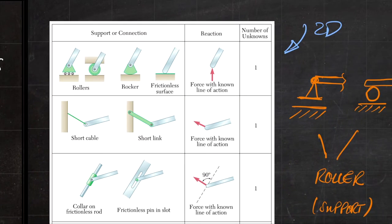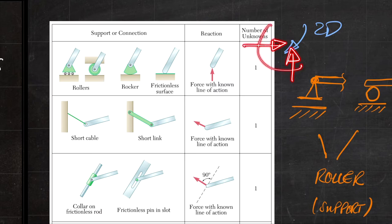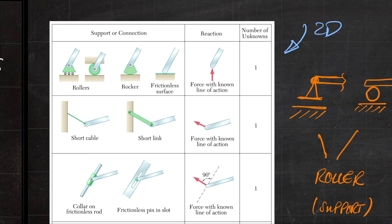If you think about supports in 2D, they can apply either forces or moments. So you have two forces in the y and x direction and also a moment. A support in 2D can apply at most three components: two forces and one moment. But different supports may apply only individual forces or just a moment.